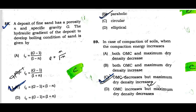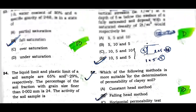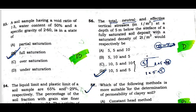Question fifty-five: A deposit of fine sand has porosity and specific gravity Z. The critical hydraulic gradient is Z minus 1 multiplied by 1 minus n (in terms of porosity). Option C is correct. Question fifty-six: The total, neutral, and effective vertical stress at a depth of 5 meters below the surface of a fully saturated soil deposit with saturated density 2 ton per cubic meter would respectively be 10, 5, and 5. Option D is correct.